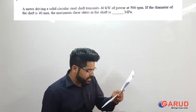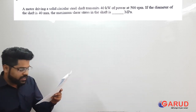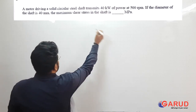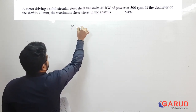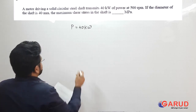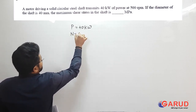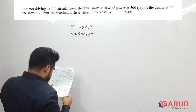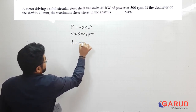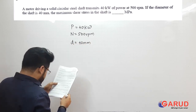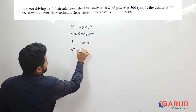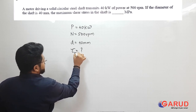So let's check what they are asking. A motor driving a solid circular steel shaft transmits 40 kW of power. Write down what is given: power P = 40 kW, RPM N = 500 RPM, and diameter of the shaft D = 40 mm. They are asking for the maximum shear stress in the shaft — that is tau, or more precisely tau max.